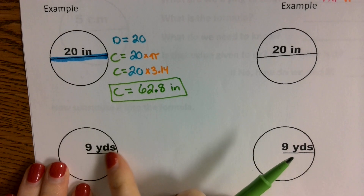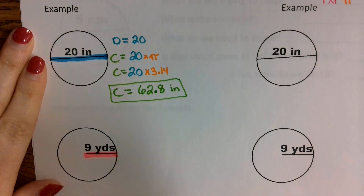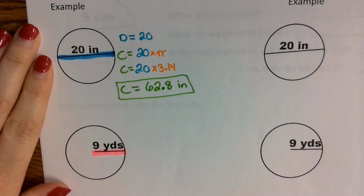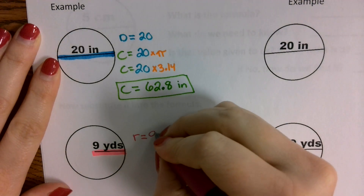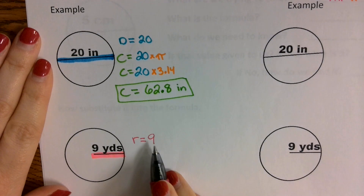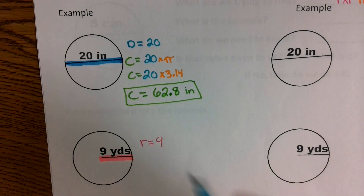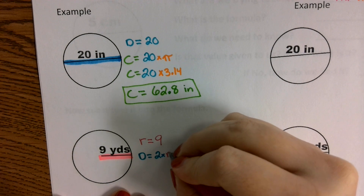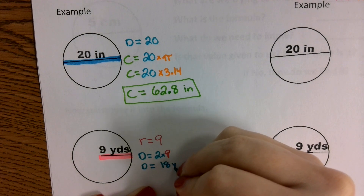For the second example, did they give me the diameter or the radius? The radius. They gave me the radius, but for circumference, what value do I need? I need diameter. So if they give me the radius, I can change that into diameter. How do we change a radius into diameter? Multiply it by 2. Diameter is found by taking the radius and multiplying it by 2. So what is the diameter? 18. The diameter is 18 yards.